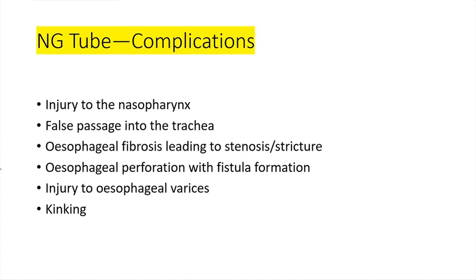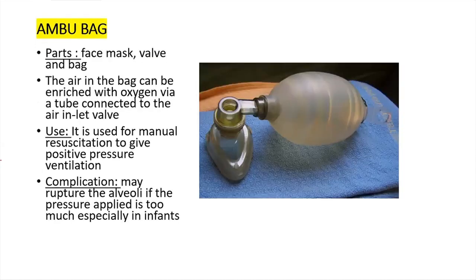Complications of NG tube passage include injury to the pharynx, false passage into the trachea, esophageal fibrosis leading to stenosis and stricture — especially in those on NG tube for a long time — esophageal perforation with fistula formation, injury to esophageal varices, and kinking of the tube.